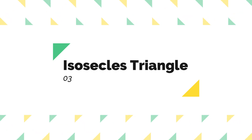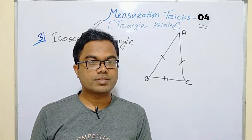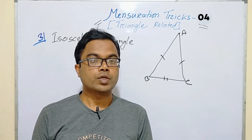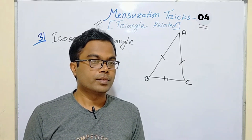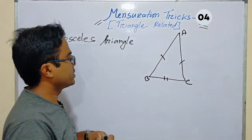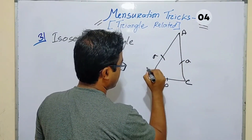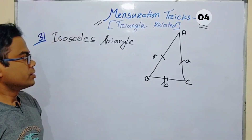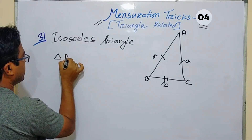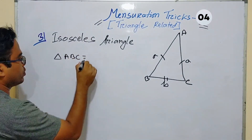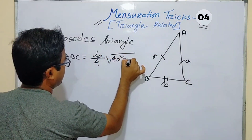Now, an isosceles triangle is one whose two sides are equal and one side is unequal. If we consider the two equal sides as 'a' and the unequal side as 'b', then in this case the area of triangle ABC will be calculated accordingly.